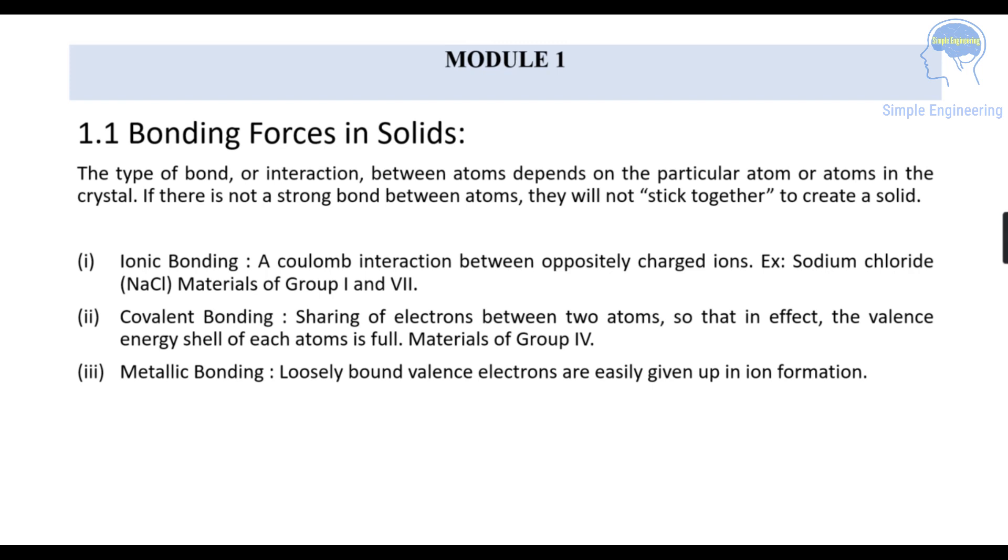Between the atoms we need a strong bond and this bonding in solids can be categorized into three: ionic bonding, covalent bonding, and metallic bonding. Ionic bonding is a coulomb interaction between oppositely charged ions, for example sodium chloride NaCl of group 1 and 7. Covalent bonding is the sharing of electrons between two atoms so that in effect the valence energy shell of each atom is full, materials of group 4.